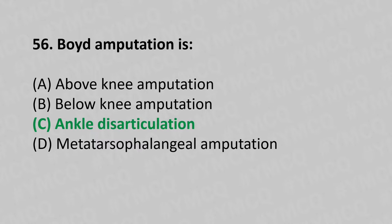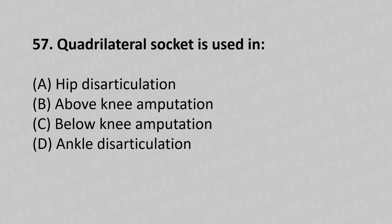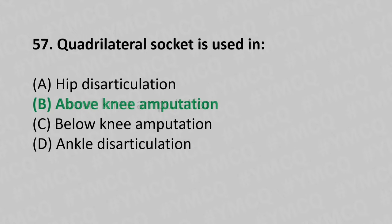Moving to our 57th question. Quadrilateral socket is used in: Option A, Hip disarticulation; Option B, Above knee amputation; Option C, Below knee amputation; Option D, Ankle disarticulation. And the answer is Option B, Above knee amputation.